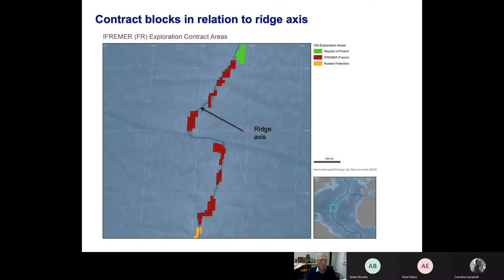You can see on this slide that the contract blocks belonging to Ifremer and France are very much concentrated along the axis of the ridge and very much dependent on where those active vents have been found at the moment, or where expected active vents are likely to occur in the future.